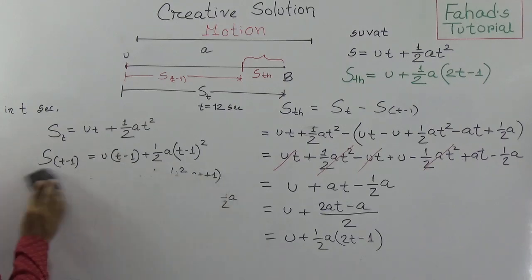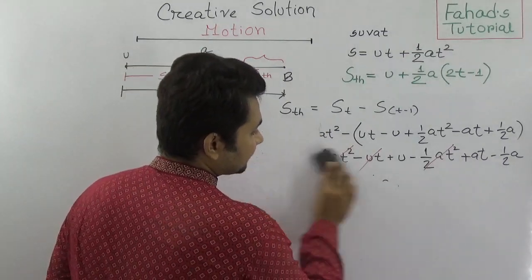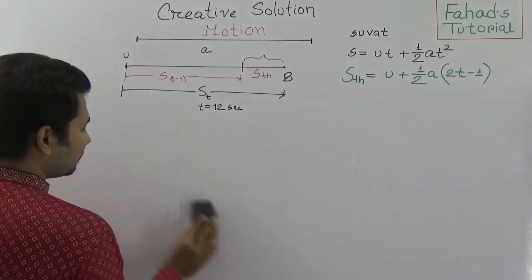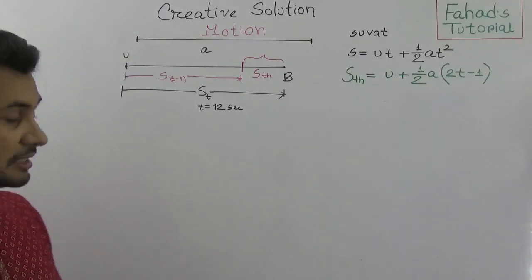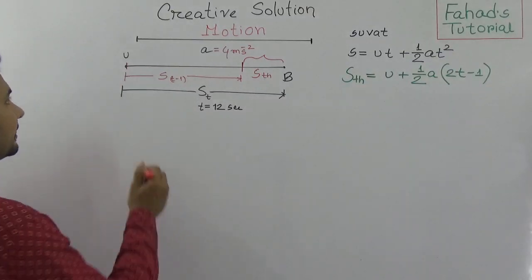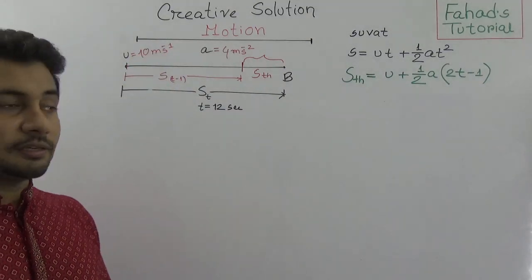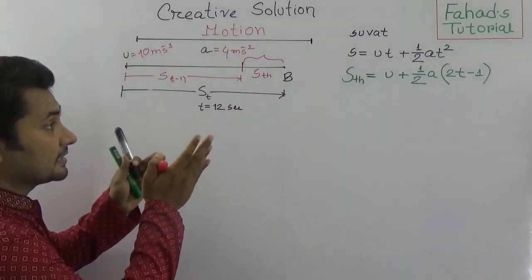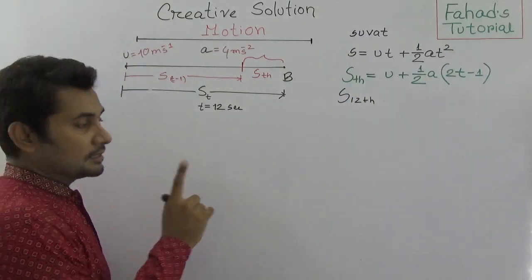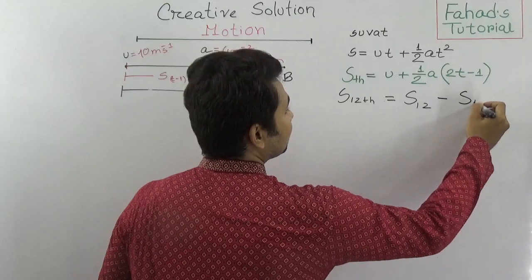Now let's apply this with a numerical example. Suppose something is moving with an initial velocity of 10 m/s and an acceleration of 4 m/s². The question asks: what is the distance travelled by that object in the 12th second? We need to find the distance in 12 seconds minus the distance in 11 seconds.